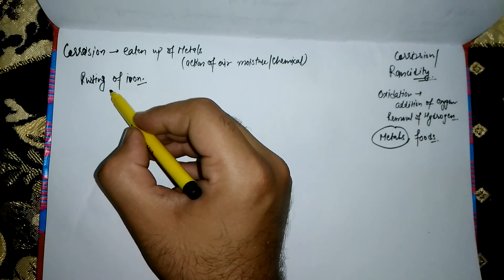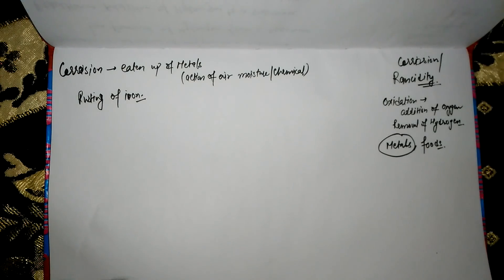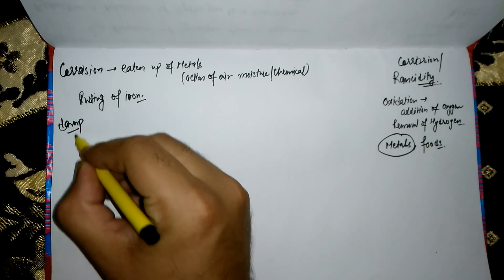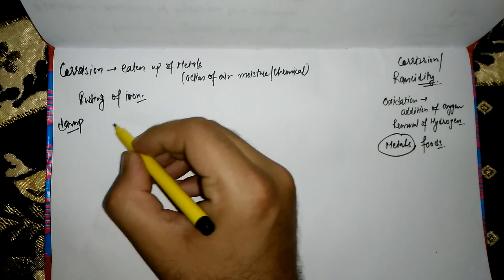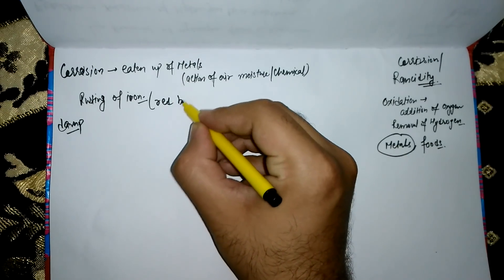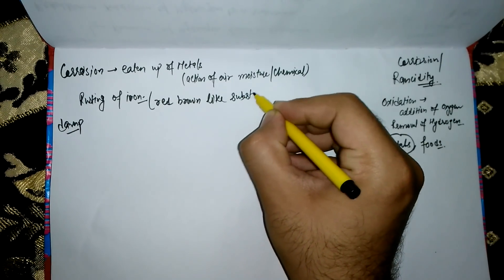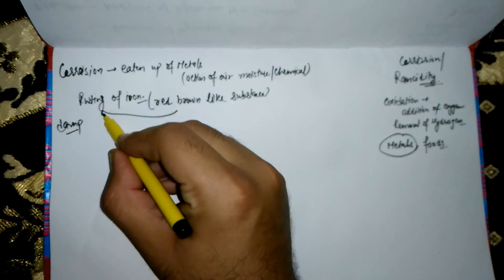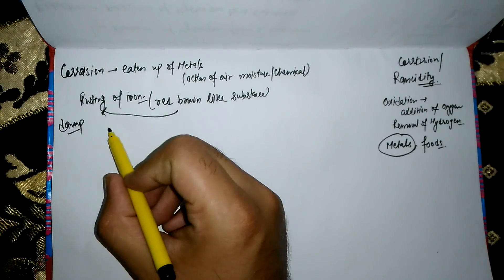When an iron object is left in damp or moist air for a considerable time, it gets converted into a red-brown flaky substance. We call this substance rust, and this process is what we call the rusting of iron.